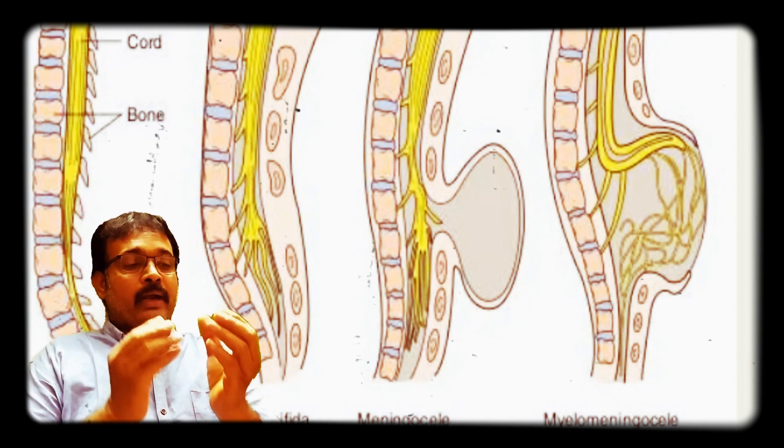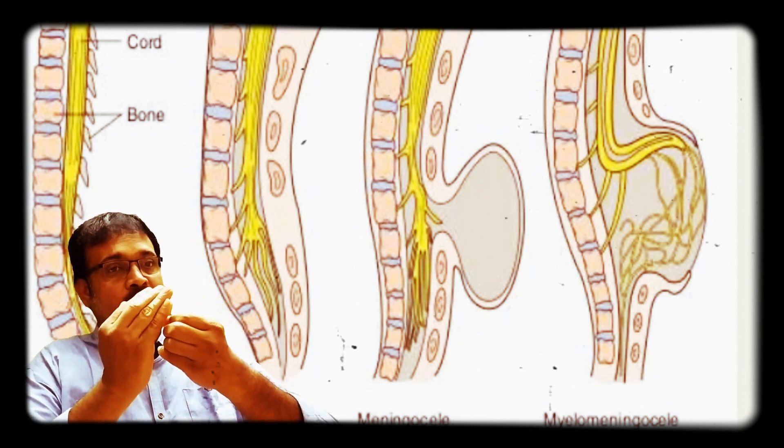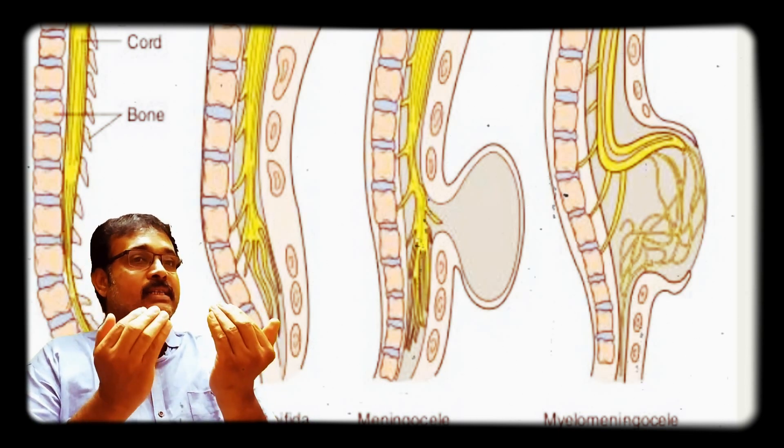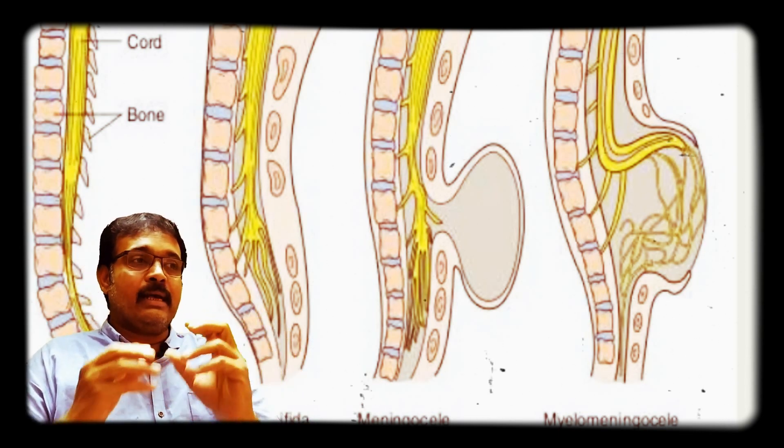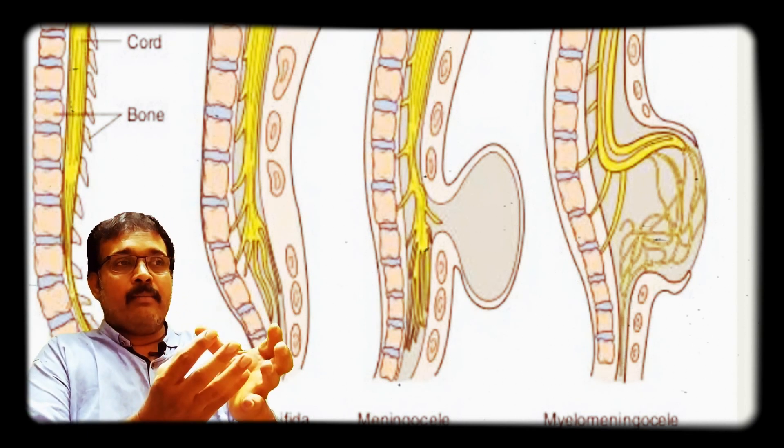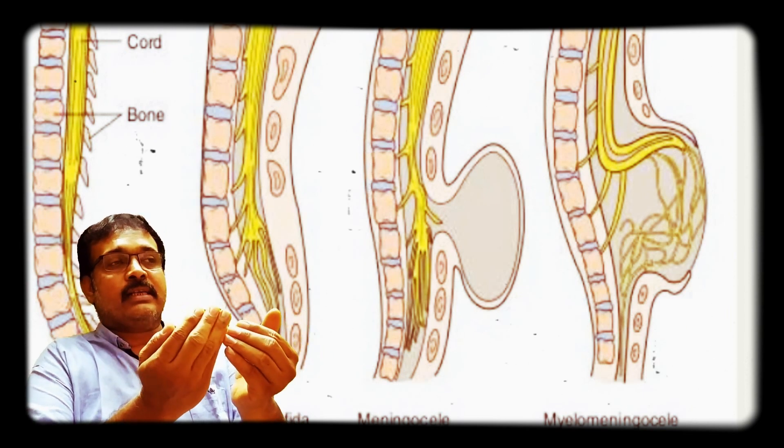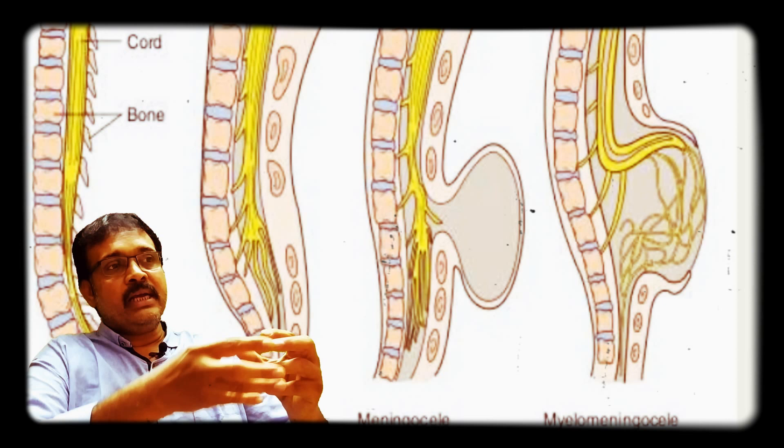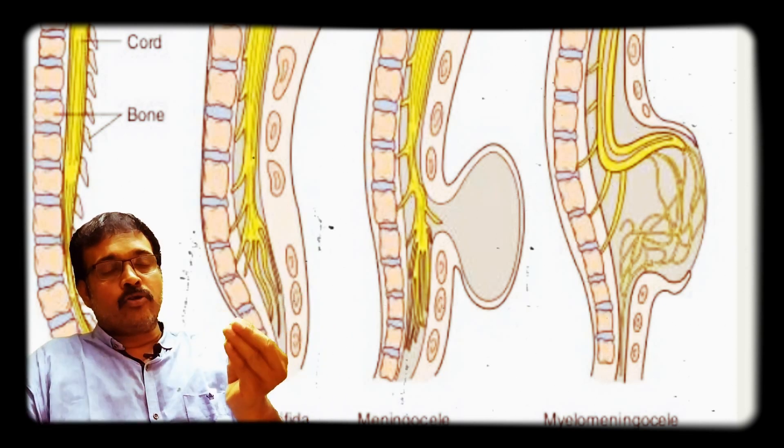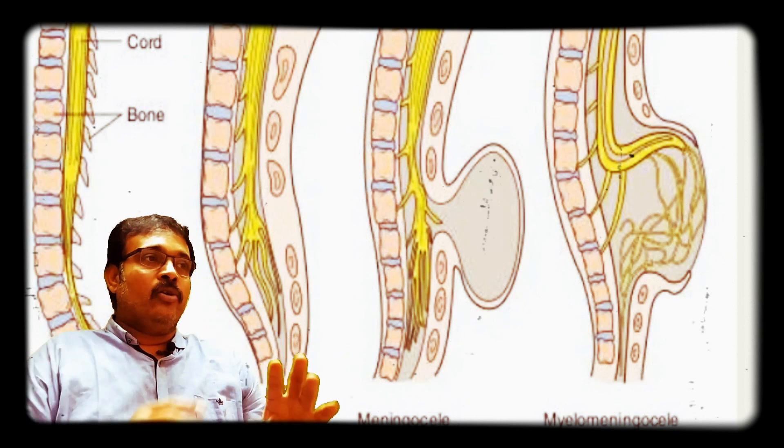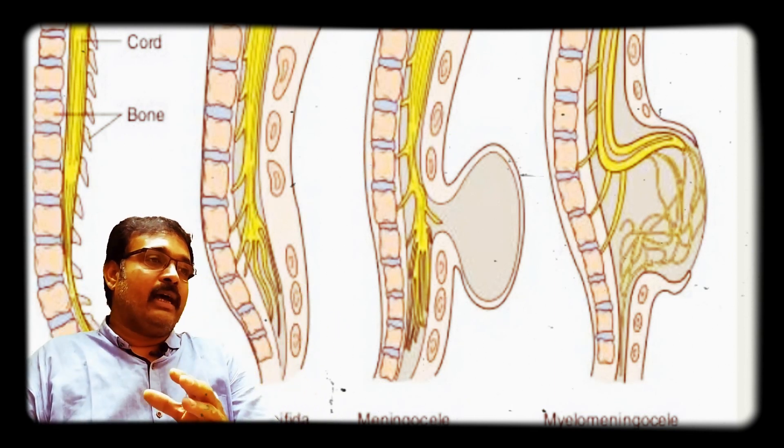Spina bifida is when the spinal cord is abnormal at the distal end due to incomplete formation of the pedicles and lamina, creating a cleft. There is spina bifida with meningocele and spina bifida with meningomyelocele - this is all structural disorder.